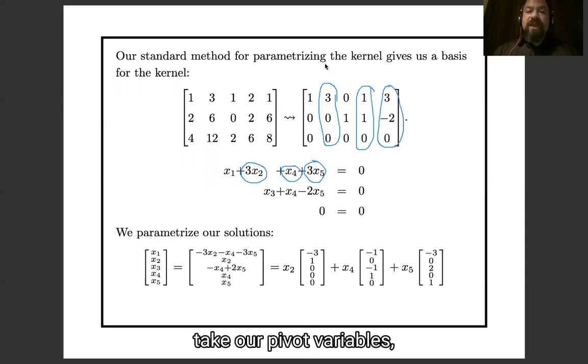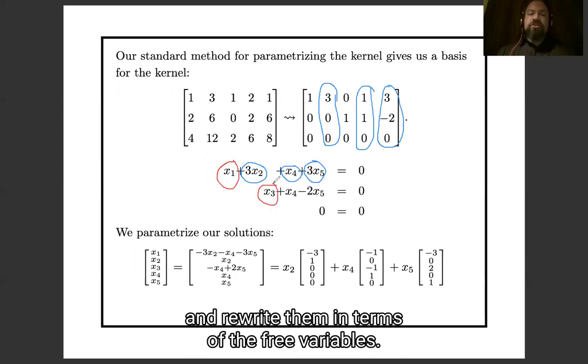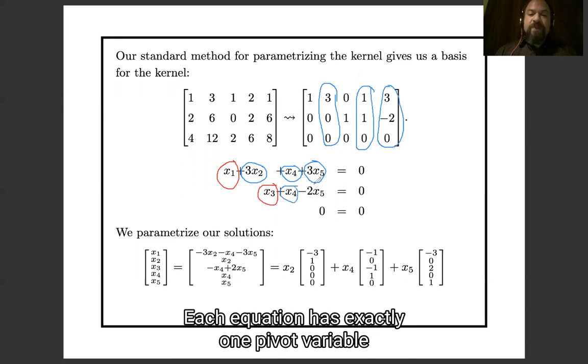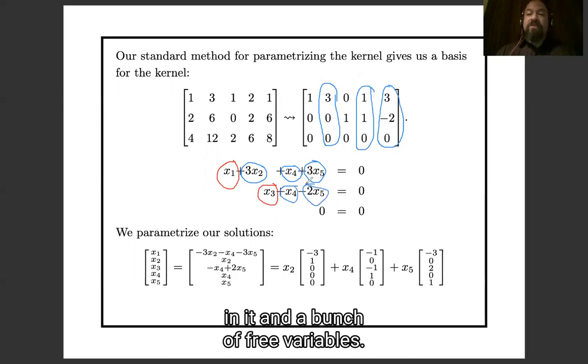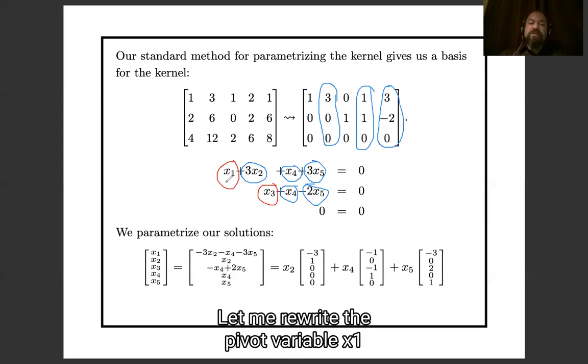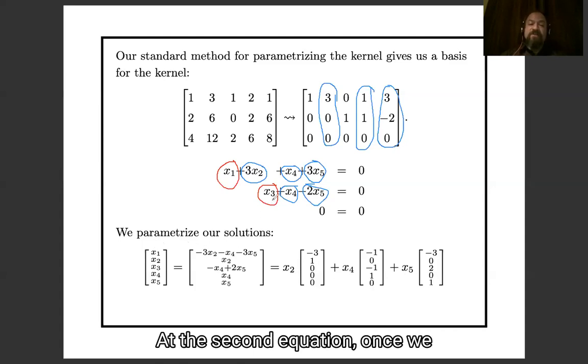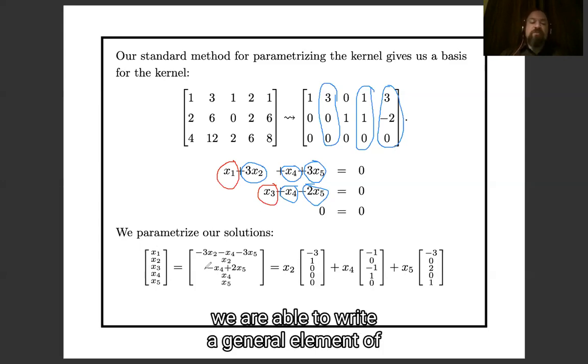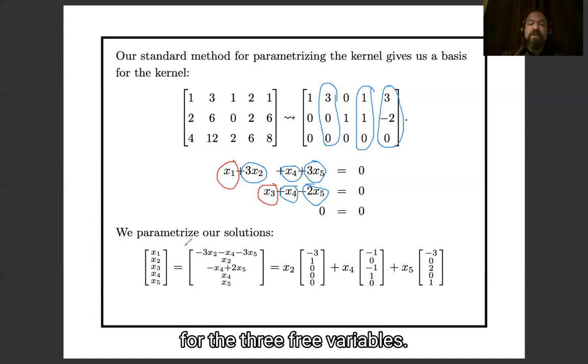Which means we're going to be able to take our pivot variables, the first and third variable, and rewrite them in terms of the free variables. Notice in row reduced form each equation has exactly one pivot variable in it and a bunch of free variables. So for example this first equation lets me rewrite the pivot variable x1 in terms of the three free variables. And the second equation lets me rewrite the pivot variable x3 in terms of the free variables. And in this way we are able to write a general element of our kernel using three parameters for the three free variables and it looks like this.